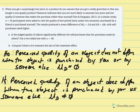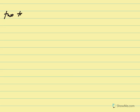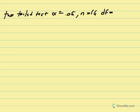Now we find our critical t value. We conduct a two-tailed test with alpha equal to 0.05. Our sample size is n equals 16, so degrees of freedom equals n minus 1, which is 16 minus 1 equals 15. Using the t table with a two-tailed test at 5% and degrees of freedom equal to 15, where those intersect we get 2.131.